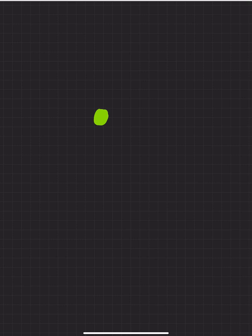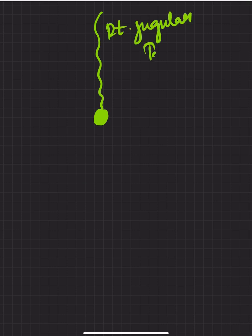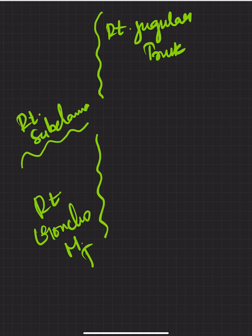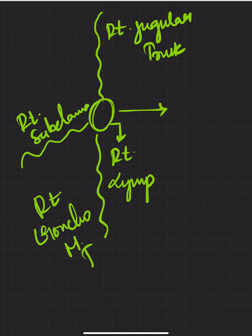When you consider the right lymphatic duct, the tributaries coming in are: from the head region, the right jugular trunk; from the right upper limb, the right subclavian trunk; and from the right part of the thorax, the right broncho-mediastinal trunk. All three drain into the right lymphatic duct, which finally drains into the right venous angle.